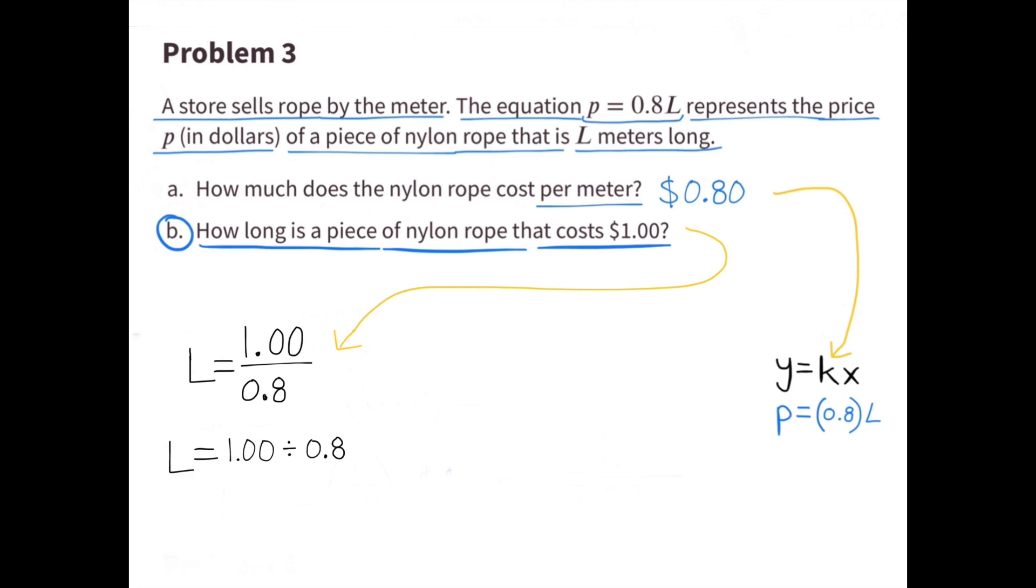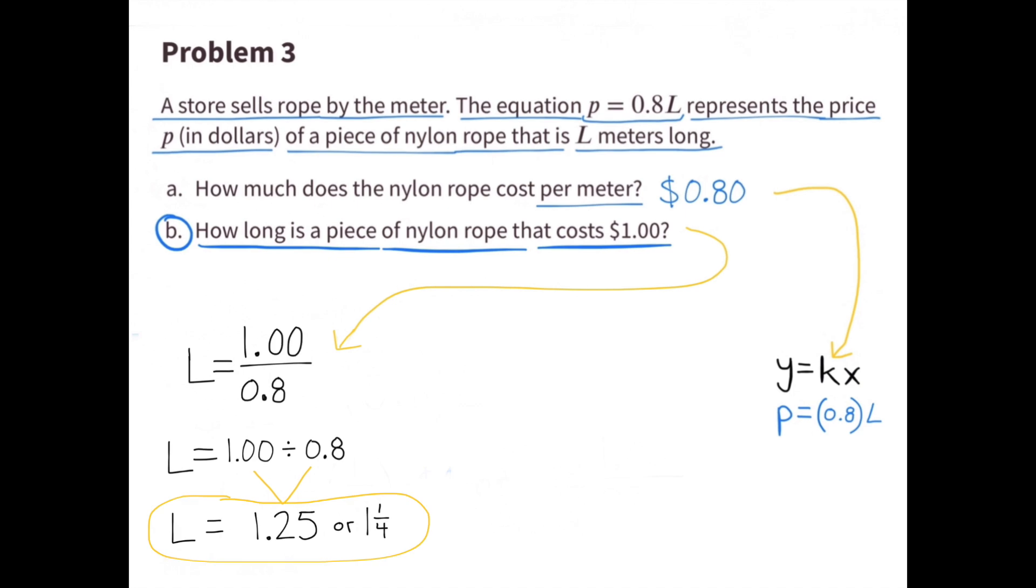And 1 divided by 8 tenths is 1 and 25 hundredths, or 1 and 1 fourth. So the length of a piece of nylon rope that costs 1 dollar is 1 and 25 hundredths meters long, or 1 and 1 fourth meters long.